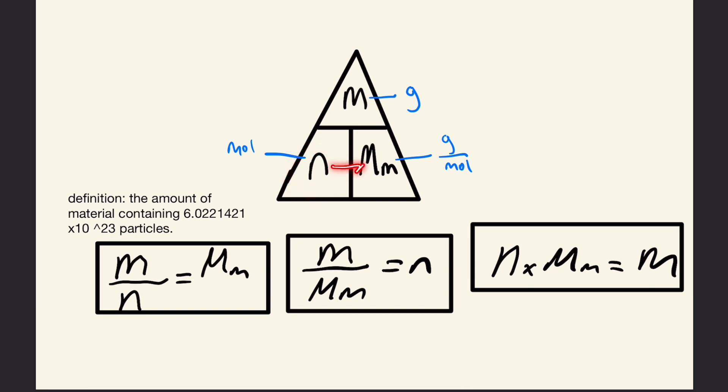Lastly, if we multiply the terms on the bottom, moles and molar mass, we get the term on top, which is mass. That's shown by this box over here.